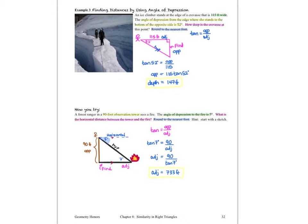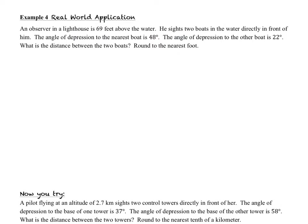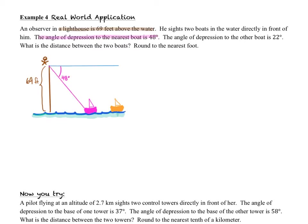Let's take a look at example 4. He cites two boats in the water directly in front of him. The angle of depression to the nearest boat is 48 degrees. The angle of depression to the other boat is 22 degrees. What is the distance between the two boats? We'll round to the nearest foot. We have a very interesting-looking diagram, but we don't see our right triangles very easily, so let's draw in some right triangles. I've drawn in a pink segment so we can see the triangle, and shading it in makes it a lot easier. We can see the pink triangle clearly — we know it's a right triangle.